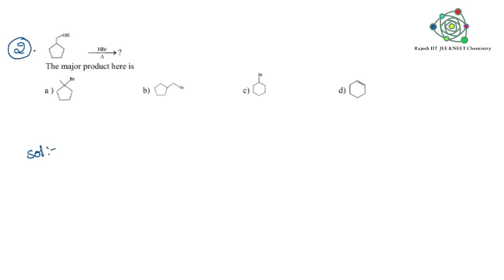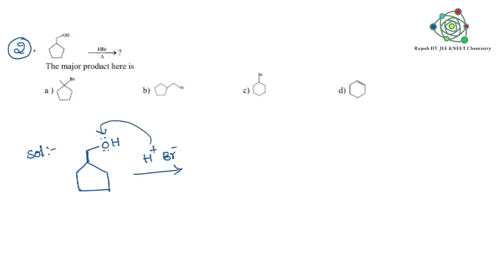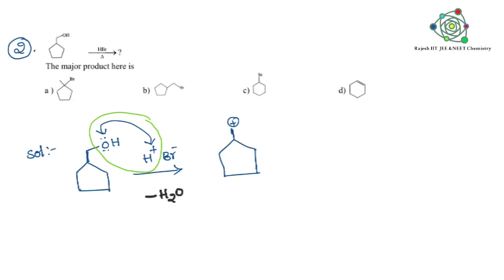Now coming to the second problem, which is very interesting. We are taking a cyclic ring-containing alcohol and treating it with HBr. The alcohol acts as a base and H⁺ acts as an acid; both interact and come out as a water molecule. After the water molecule leaves, you are getting a carbocation.